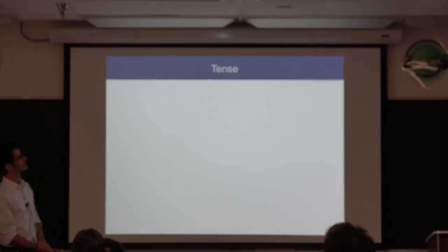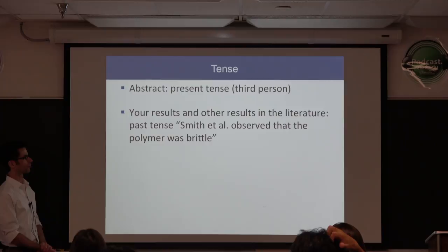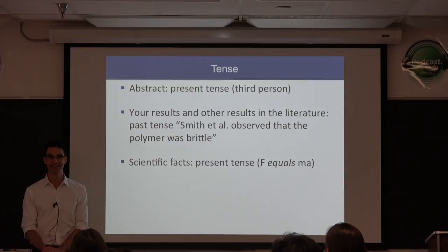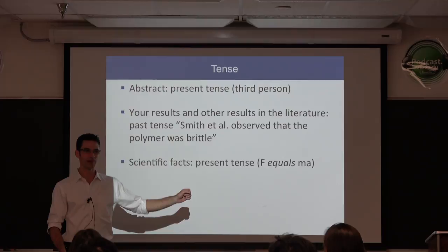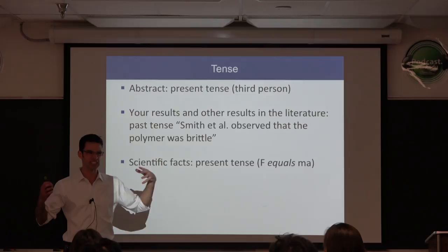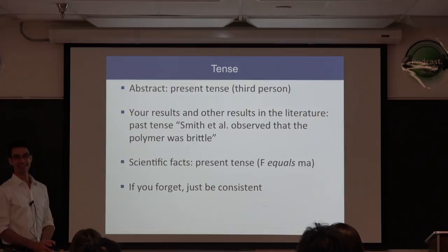Tense: the abstract is in the present tense according to the ACS style guide. Your results and the results of others in the literature are in the past tense: 'Smith et al. observed that the polymer was brittle.' But scientific facts are in the present tense. F doesn't just equal MA because Newton found it — F really does equal MA. If you forget the convention, just be consistent. Don't switch back and forth between present and past tense in the body of the work.